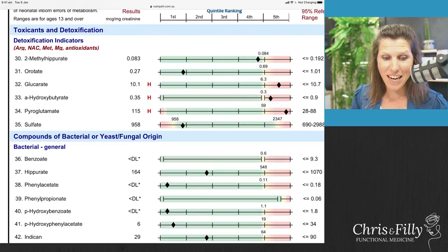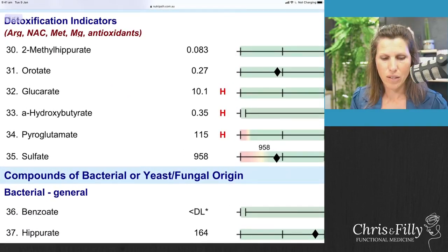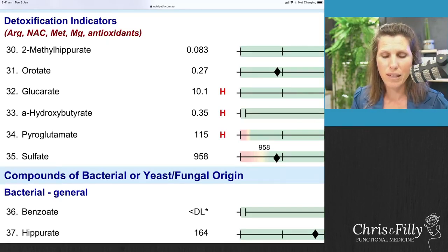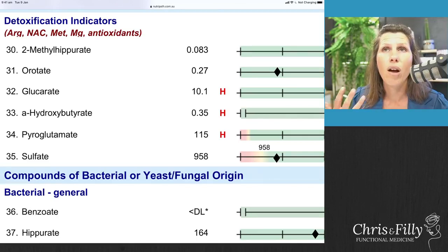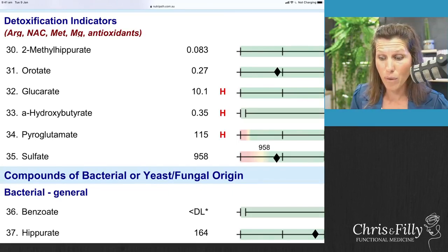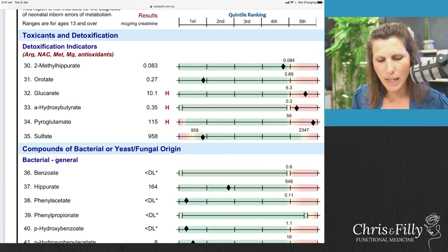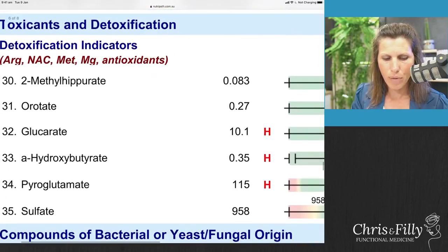Then we have the toxicants and detoxification markers — this is on the third and last page. Markers 30 to 35 are all about clearance and your phase two liver detox pathways. In these pathways you need a lot of sulfur-containing amino acids. This section is looking at what your stores are for those sulfur-containing amino acids — if they're being burnt through or are really depleted, it's going to significantly affect your ability to clear and break down toxins in the phase two liver detox pathway.